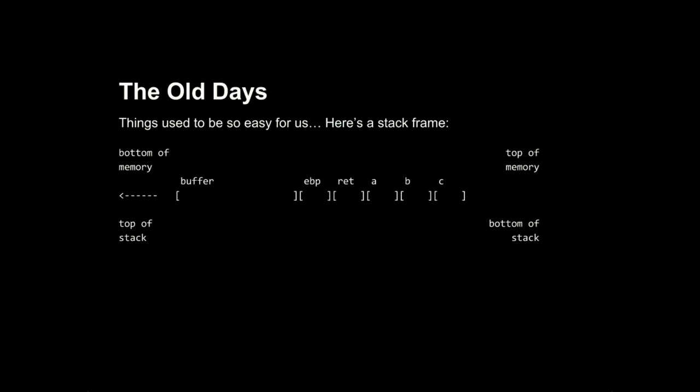Let's go way back to the old days, the wild west of binaries — things used to be super easy for us. Here's a stack frame. Hopefully everybody is familiar with what a stack frame looks like. On the left side, that's the top of the stack. You've got local variables to that particular function call, some saved registers like EBP — your saved stack pointer — and then your return instruction to wherever you came from. Then you have the arguments or parameters.